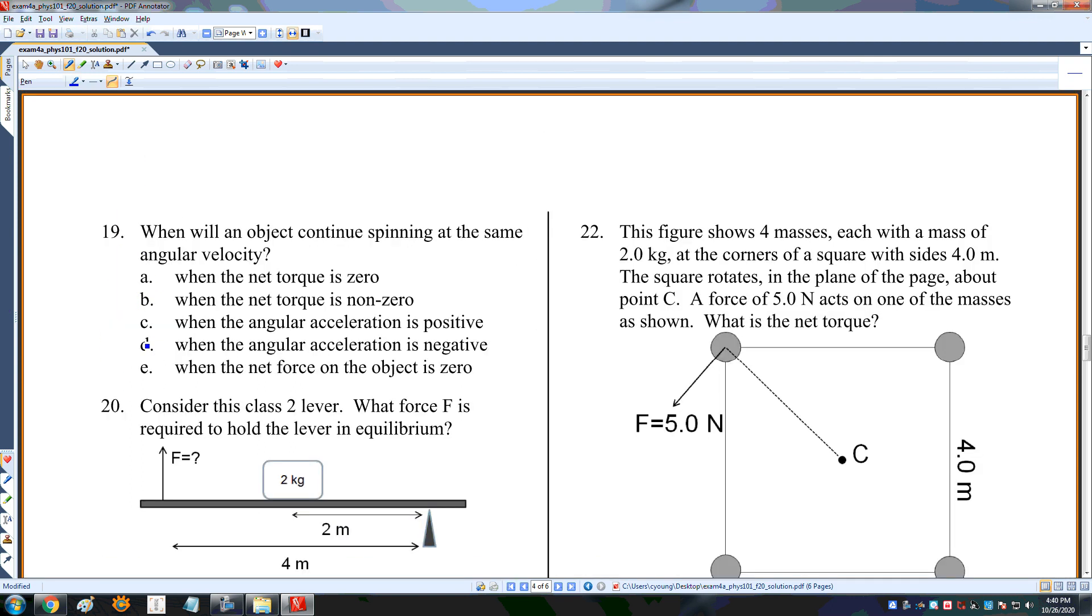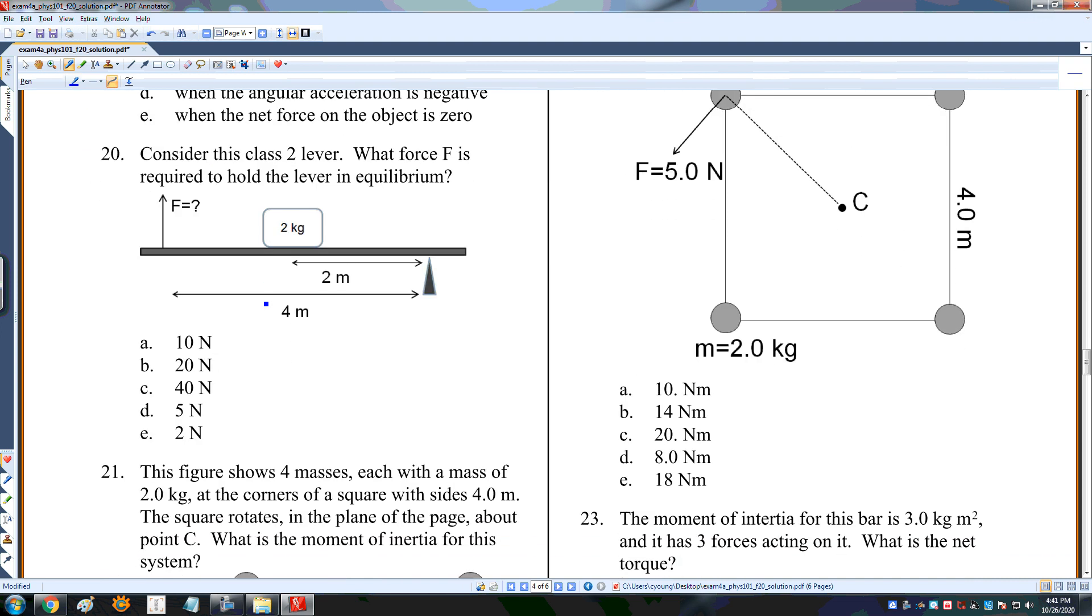When will an object continue spinning at the same angular velocity? That means alpha equals zero, only when the net torque is zero. What is force F required to hold this in place? I have a 20 newton force at 2 meters. One torque is 20 newtons times 2 meters. That has to equal F times 4 meters, so F is 10 newtons.